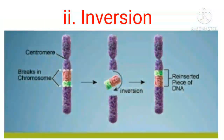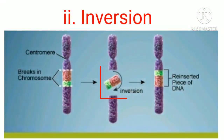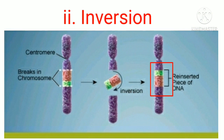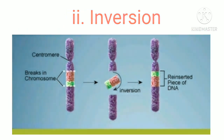Here in this figure, a chromosome segment breaks off, the segment flips around backwards, and is then reattached again. This type of mutation is known as a chromosomal inversion mutation.